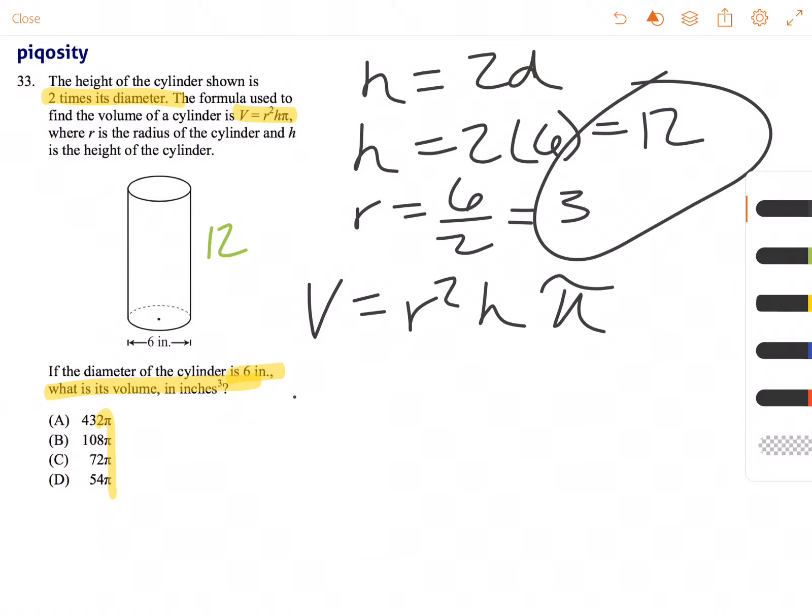Plugging in, V equals 3 squared times 12 times pi. 3 squared is 9, times 12 equals 108.